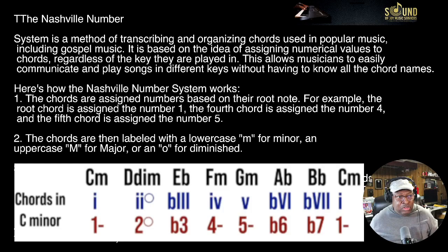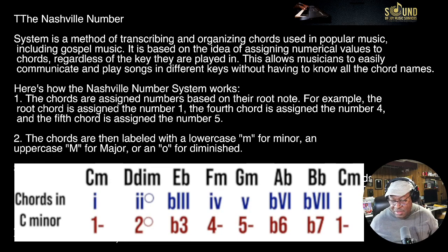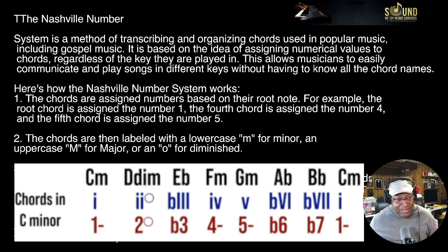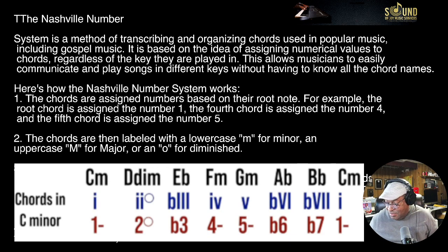So we've got the one, we've got the two which is a D diminished, the next is going to be an Eb straight major — that's chord three. Four is going to be an F minor. The next is a G minor. Your next is an Ab 6 chord, then your 7th chord is a Bb, and then the octave or back to number one is G minor. So: one, two, three, four, five, six, seven, octave or one again. That is the Nashville Number System minors.